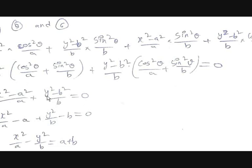Splitting the fractions: (x²/A − A) + (y²/B − B) = 0. Moving −A and −B to the other side gives the final result: x²/A + y²/B = A + B.